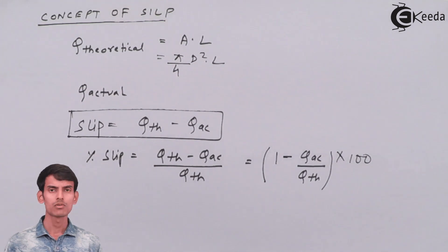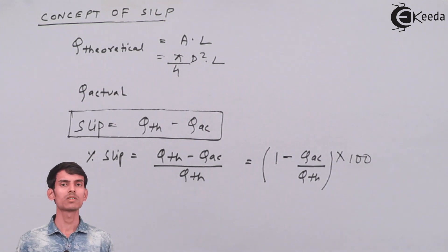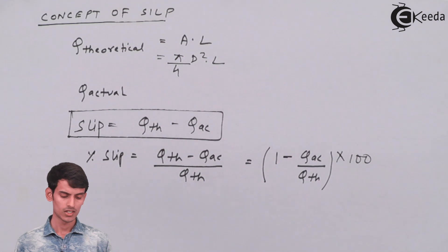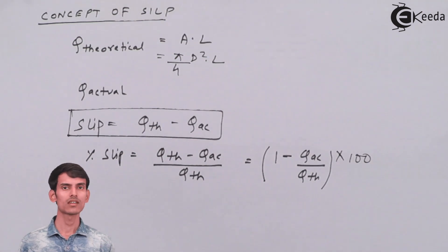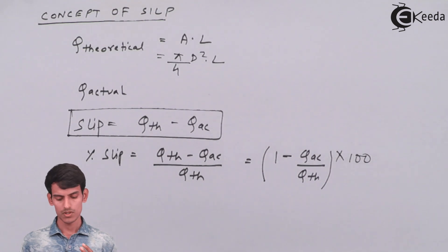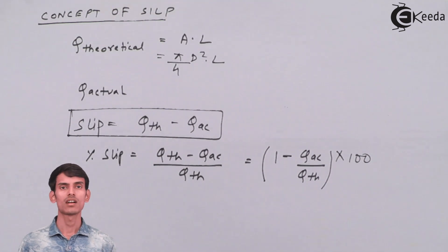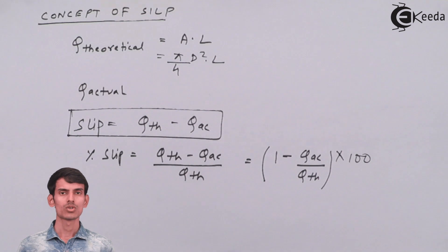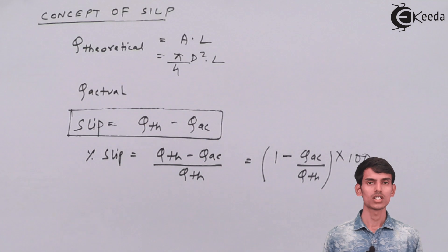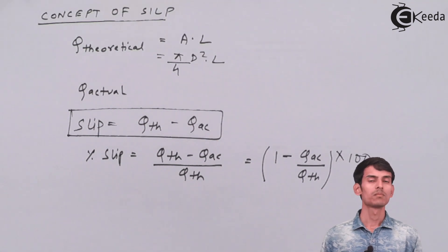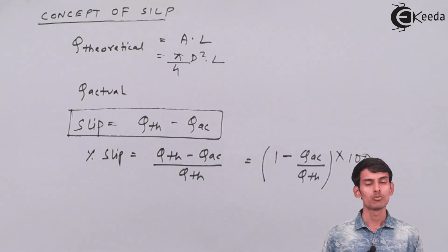To summarize: slip is the difference between theoretical and actual discharge, and percentage slip is that difference divided by the theoretical discharge, multiplied by 100 for a percentage value. This topic can be asked as a numerical — they may ask you to calculate the percentage slip. It's a very simple topic. Thank you.